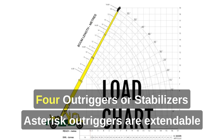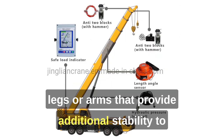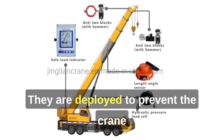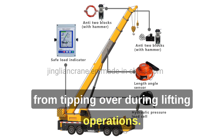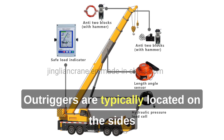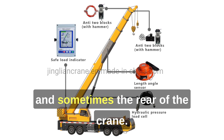4. Outriggers or Stabilizers — Outriggers are extendable legs or arms that provide additional stability to the crane while lifting heavy loads. They are deployed to prevent the crane from tipping over during lifting operations. Outriggers are typically located on the sides and sometimes the rear of the crane.